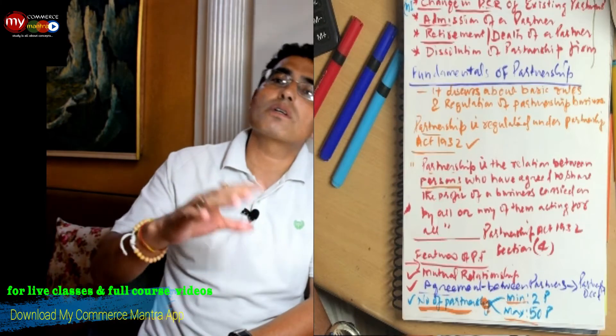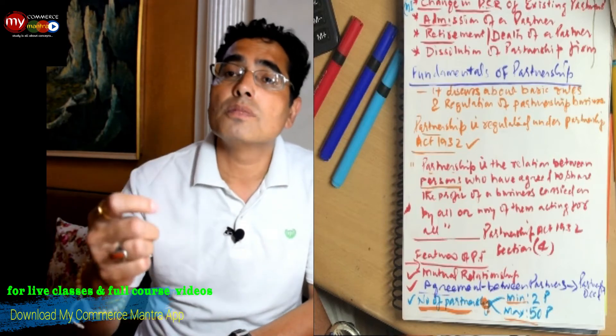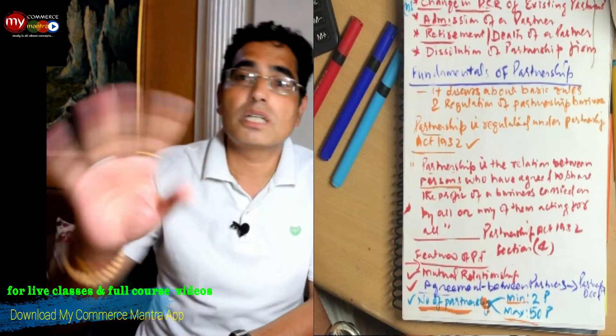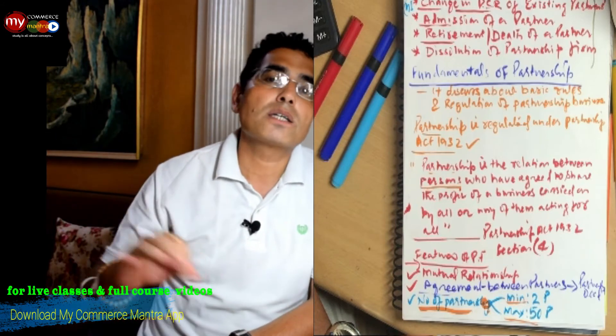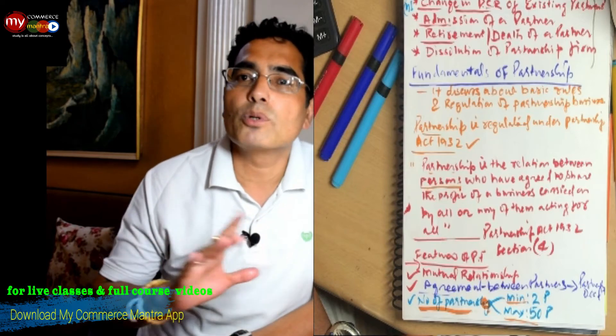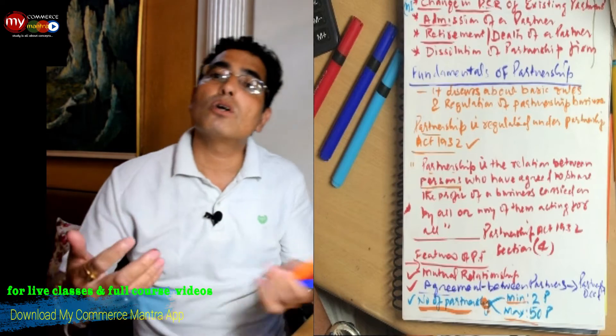So for partnership, mutual relationship is required - this is one of its features. There should be at least two people. How many maximum people - Section 4 of Partnership Act 1932 does not tell us, but we will see later who tells us this.